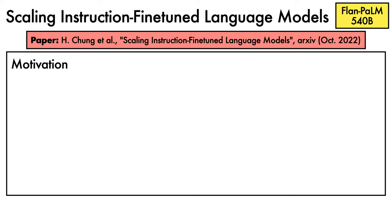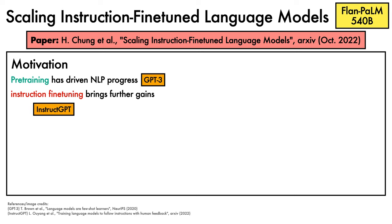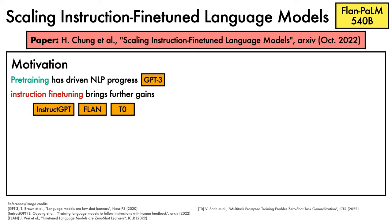The motivation for this work is that first, large-scale pre-training has driven substantial progress in NLP, a result perhaps best exemplified by GPT-3, and second, fine-tuning language models on tasks phrased as instructions brings further gains in performance. This latter finding has been demonstrated by works such as InstructGPT, Flan, and T0, among others.